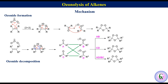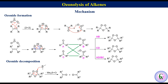Now the mechanism for decomposition of the secondary ozonide with dimethyl sulfide. The sulfur of dimethyl sulfide donates an electron pair to the peroxy oxygen, accompanied by breaking of the peroxy bond, formation of a carbon-oxygen double bond, breaking of a carbon-oxygen single bond, formation of another carbon-oxygen single bond, and breaking of another carbon-oxygen single bond. This leads to the formation of dimethyl sulfoxide and two carbonyl compounds.